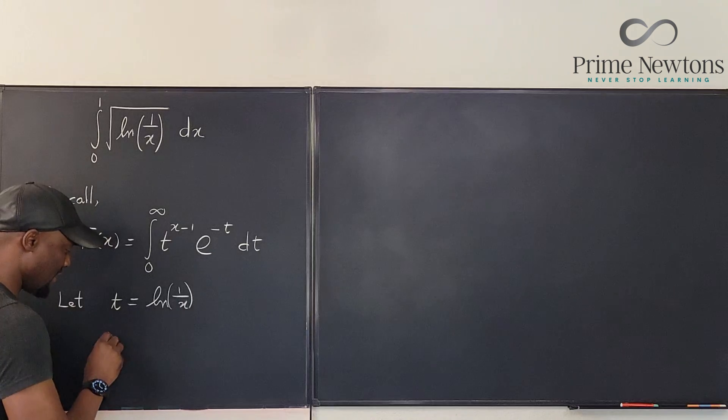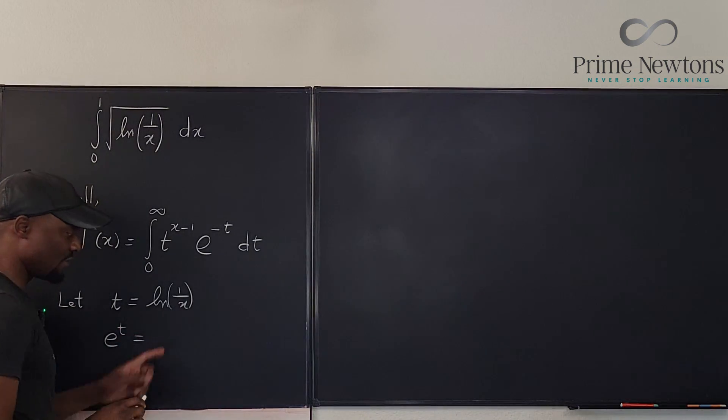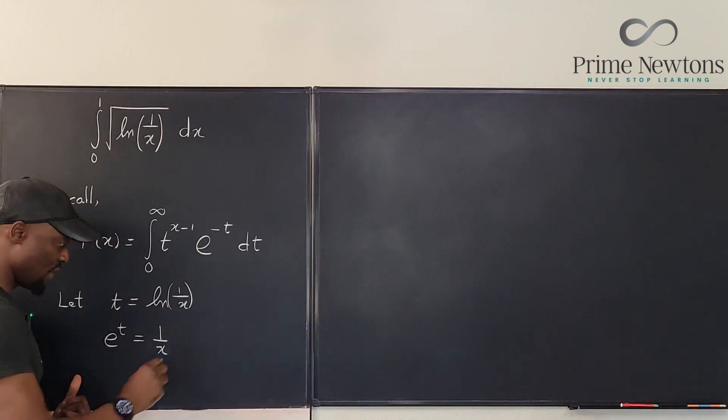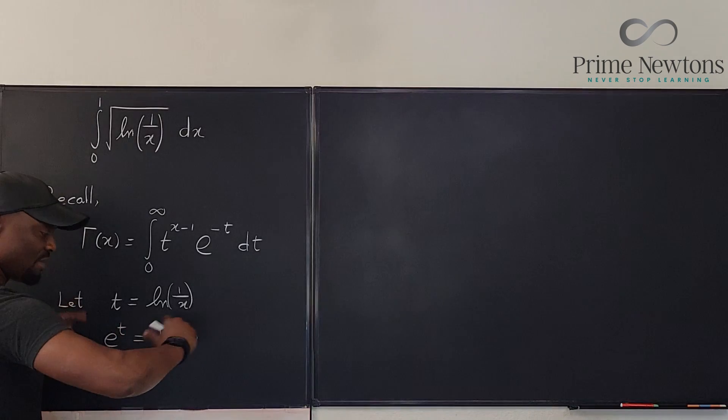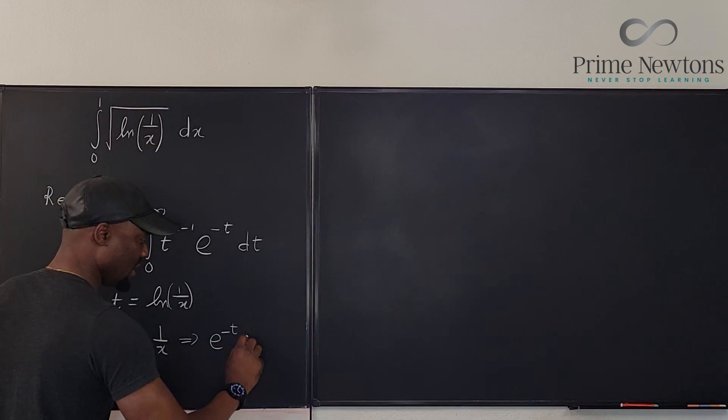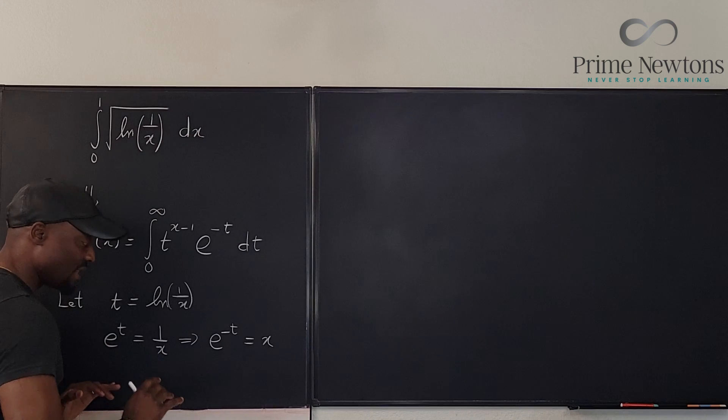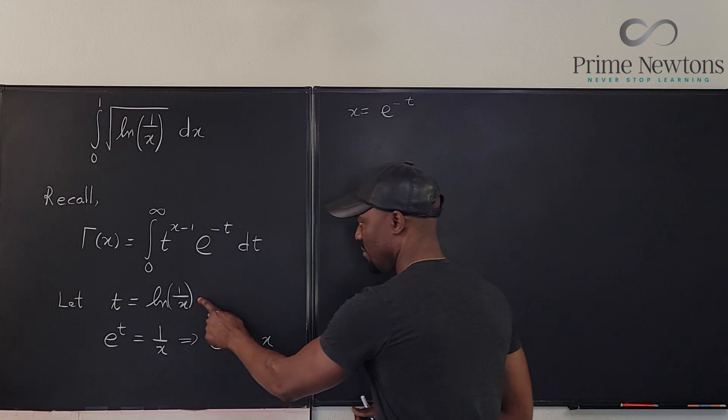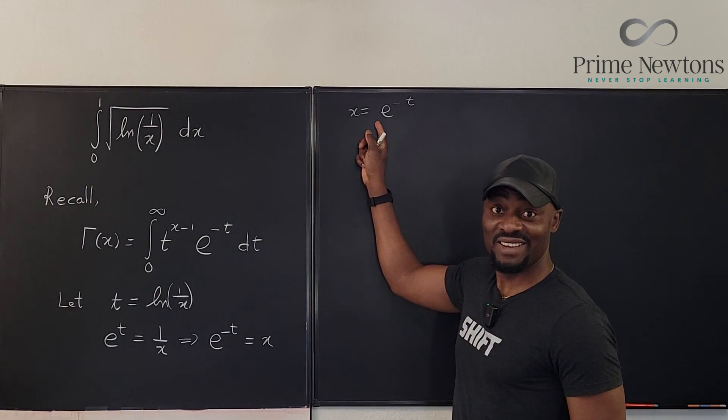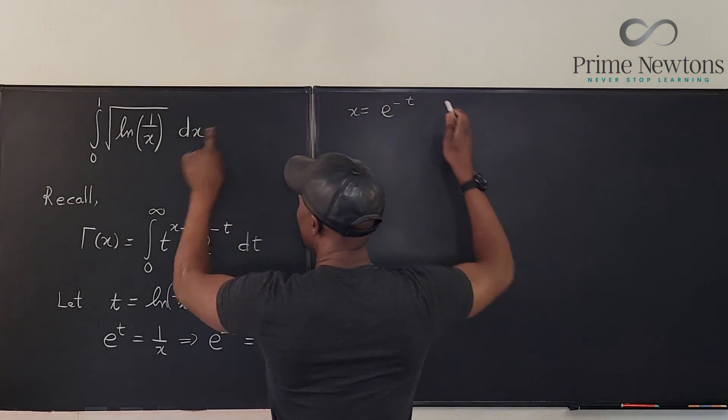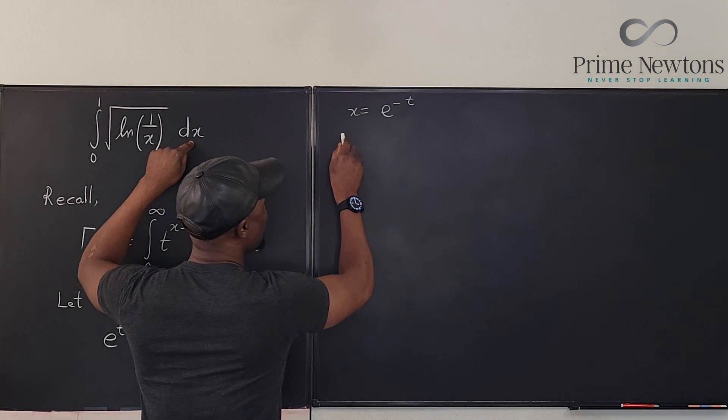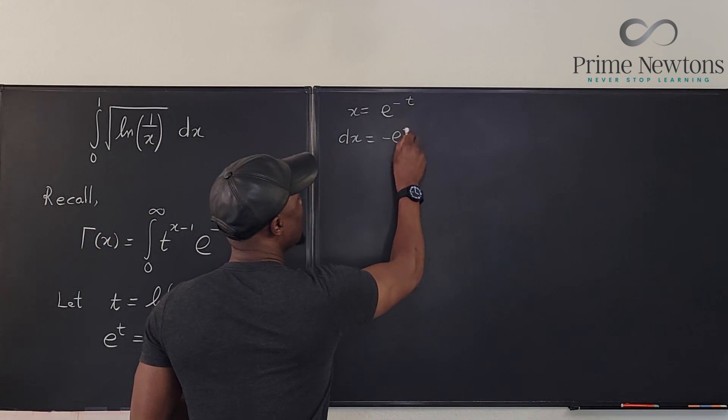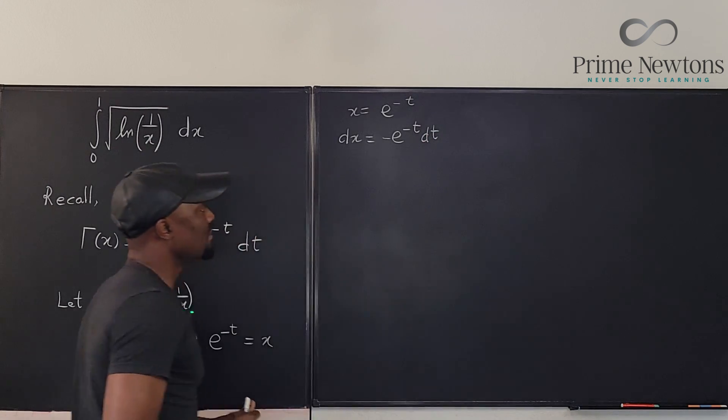And what it means is e to the t will be 1 over x. So clearly we can see this implies that if you flip both of them, e to the negative t will be equal to x. So we have established that x equals e to the negative t just by doing the substitution. And this is all we need because now we can replace dx. We can say that dx will be equal to negative e to the negative t dt. And that's it.